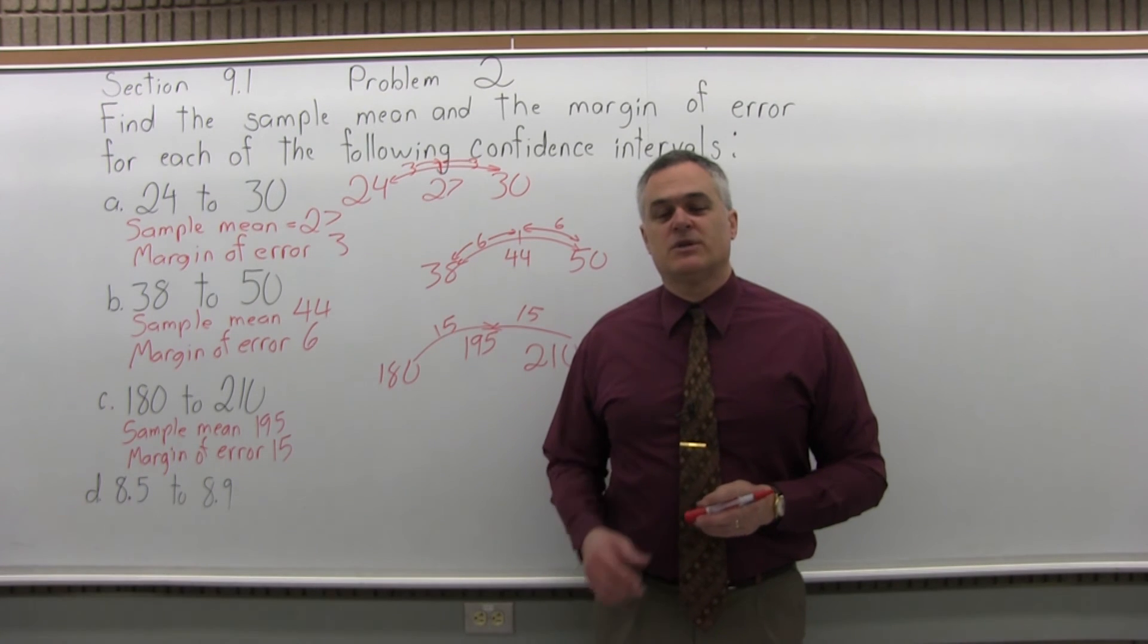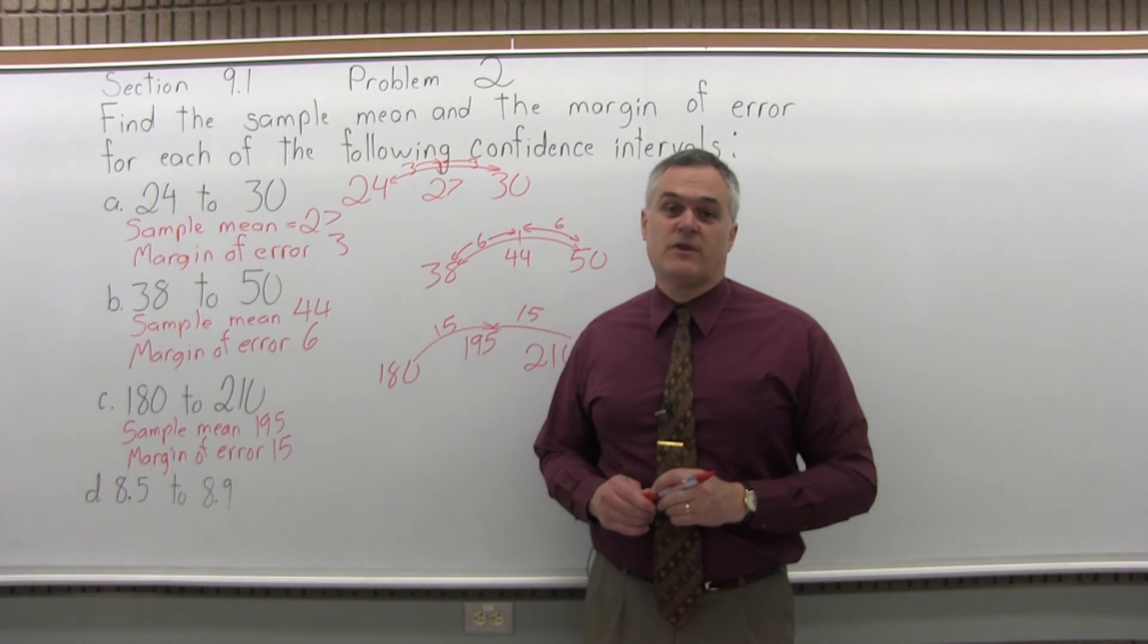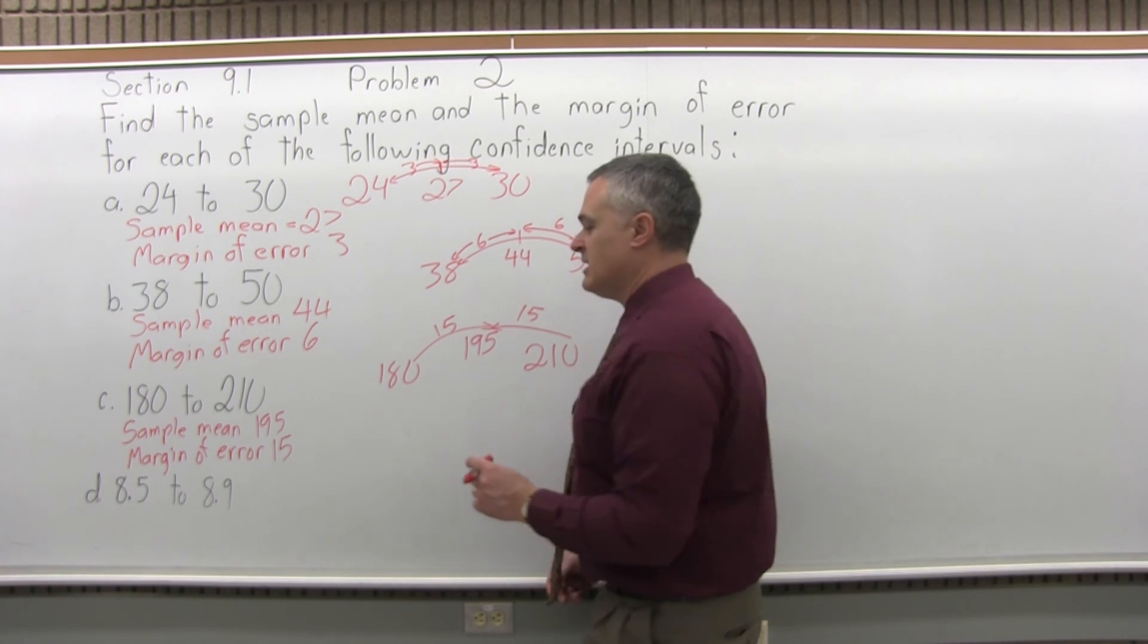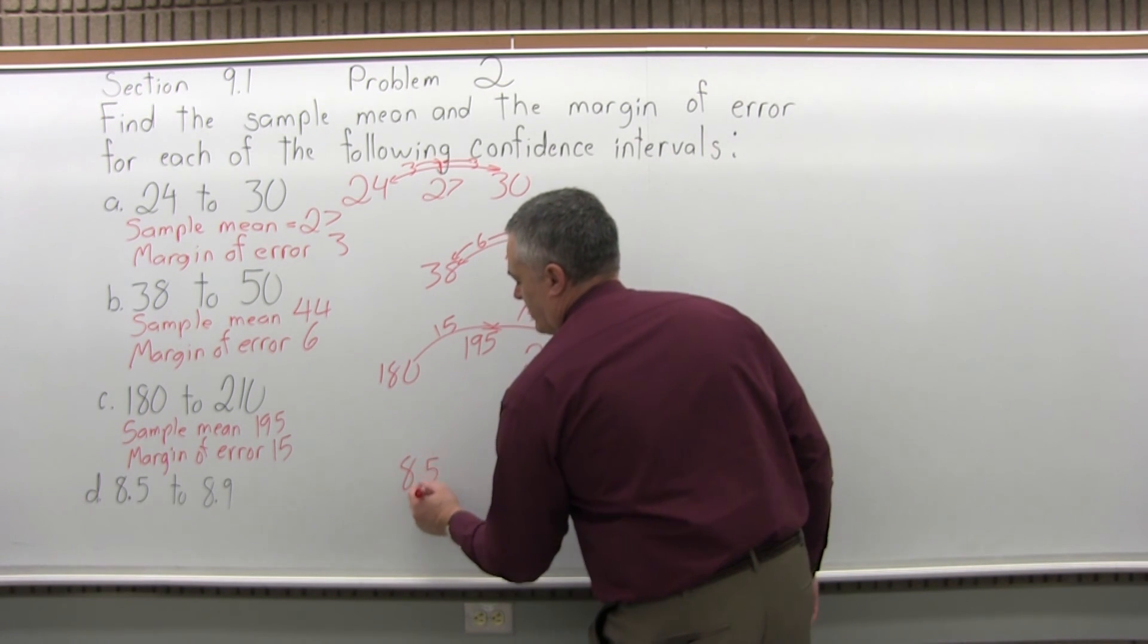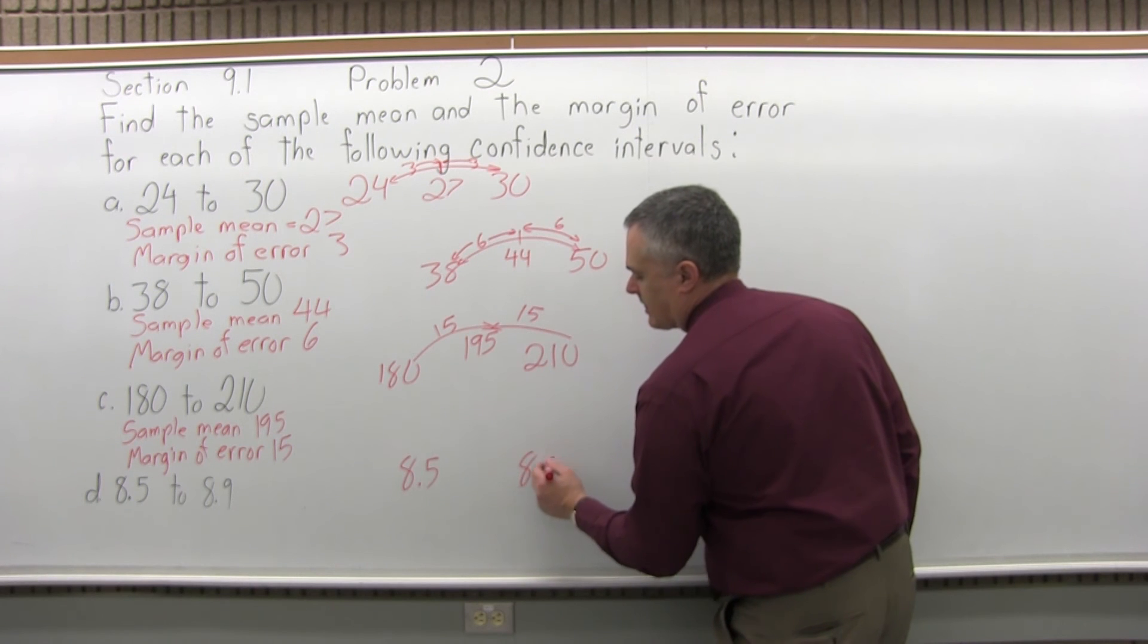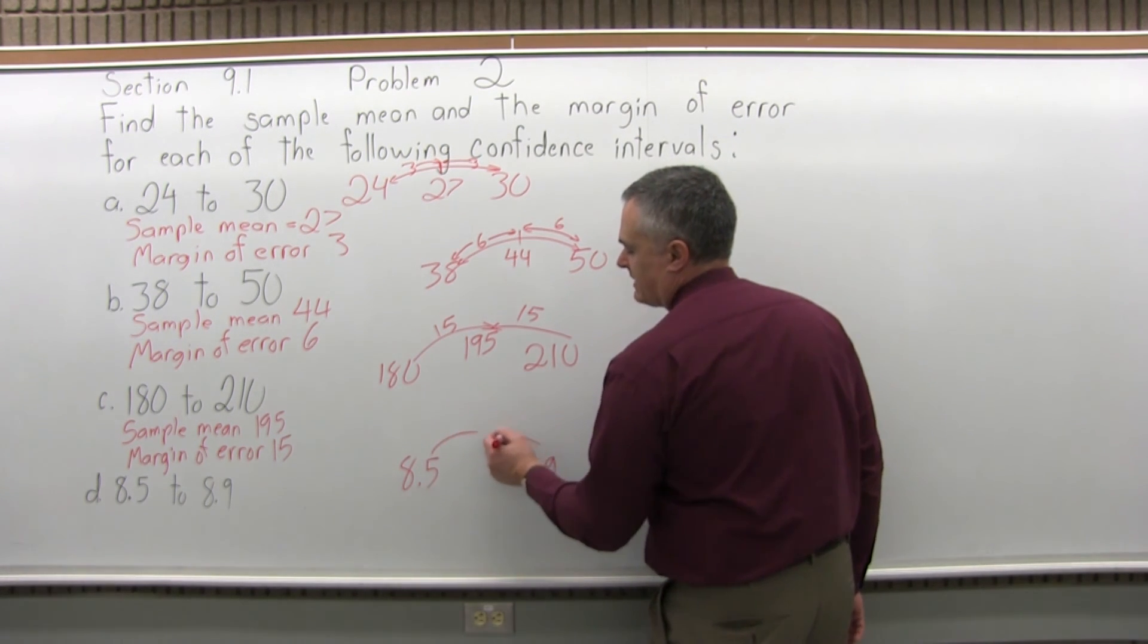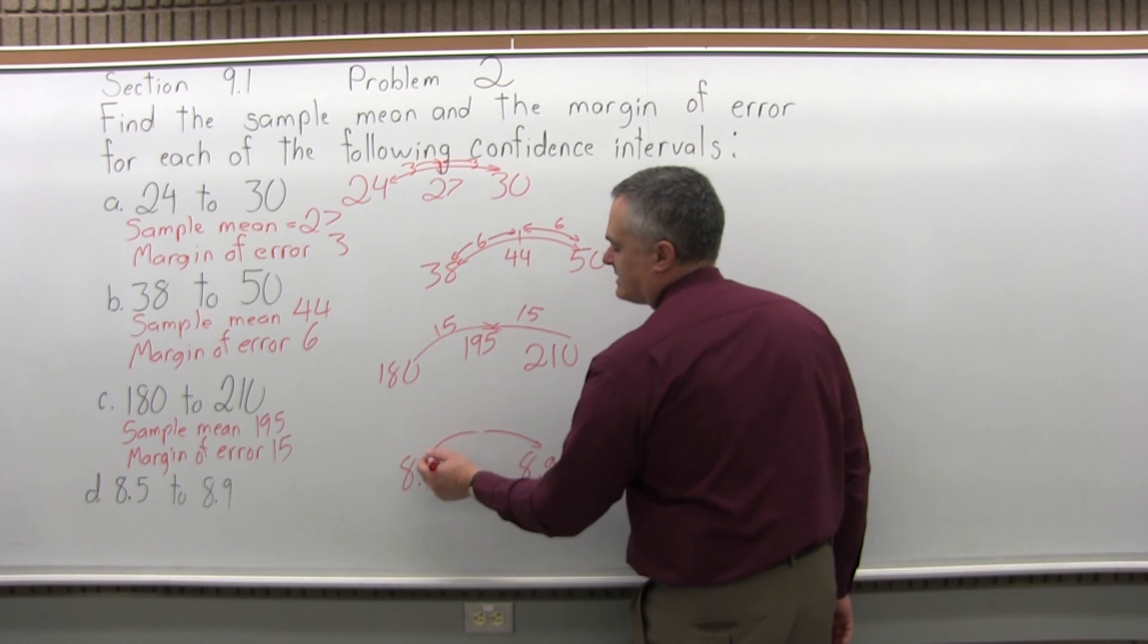And finally the last one, the confidence interval goes from 8.5 to 8.9. So here you do have some decimals, but it's the same process. Just picture 8.5 and 8.9 on a number line. So to go from end to end, from the 8.5 to the 8.9, the distance is 0.4. 8.5 plus 0.4 is 8.9.